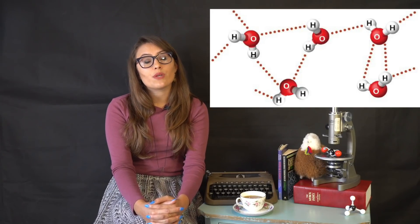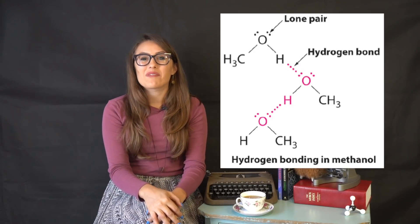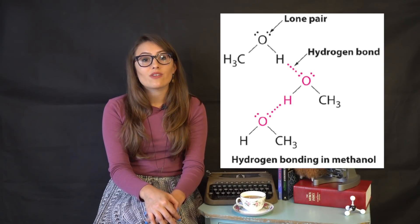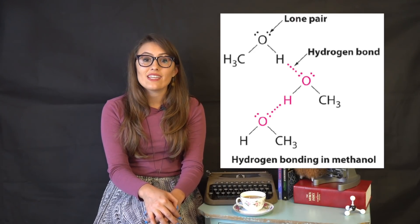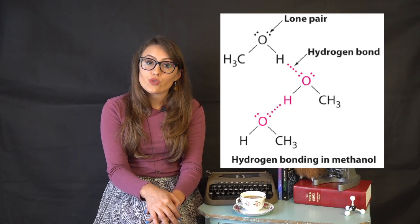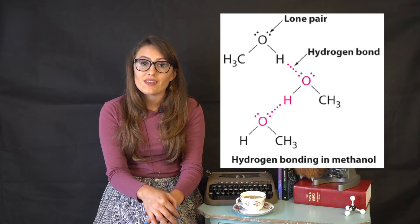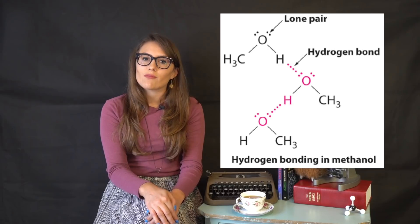There is also an extreme case of dipole-dipole interaction known as hydrogen bonding. Hydrogen bonding only occurs between molecules where hydrogen is bonded to fluorine, oxygen, or nitrogen. Since these three atoms are very small and very electronegative, their bond with hydrogen creates a large dipole moment. Their small size also allows surrounding hydrogen-bonding molecules to get much closer, significantly increasing the attractive force. It is crucial to remember that this is still an intermolecular force that occurs between several molecules. Hydrogen bonding also allows water to have a relatively high boiling point compared to other small molecules.